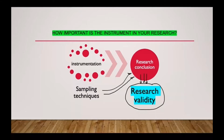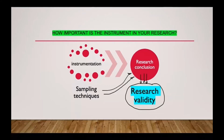Let's look at the slide. This covers instrumentation and sampling techniques, research conclusion, and research validity. When you come to a conclusion — that being the final product of your research — you have to ask: how valid is my conclusion? How strong is it? How good is it? It all depends very much on the instrumentation and the sampling techniques. How you take your sample and how you set up your instrument both influence the strength of your research conclusion. That's why instrumentation is very important.